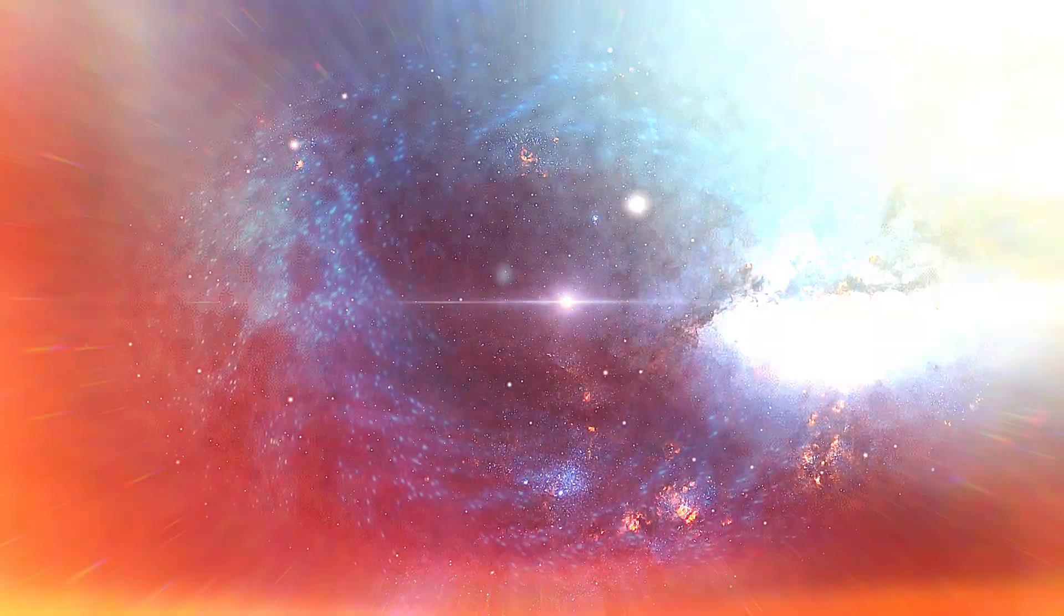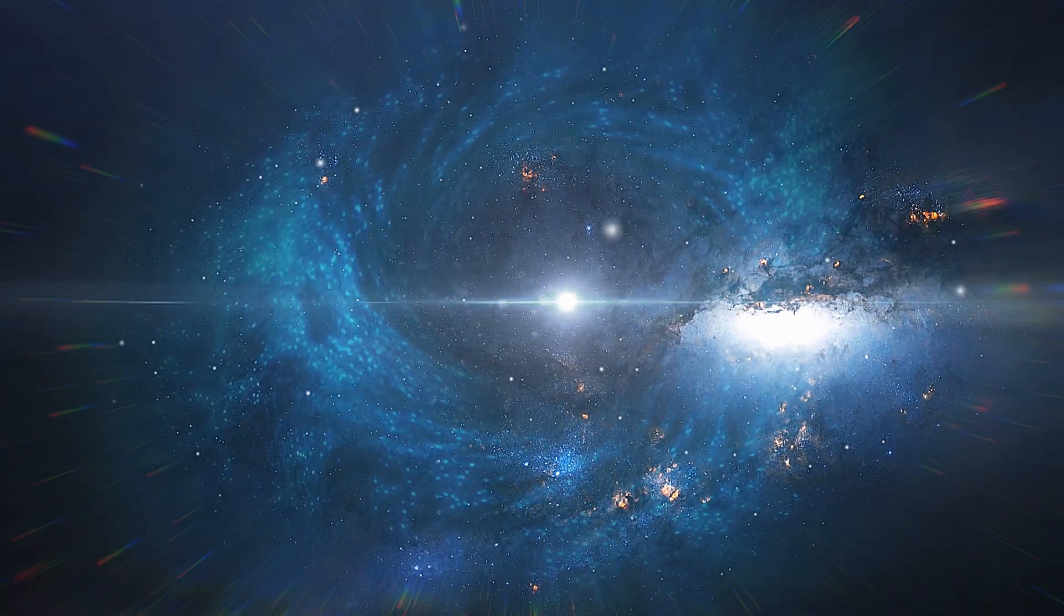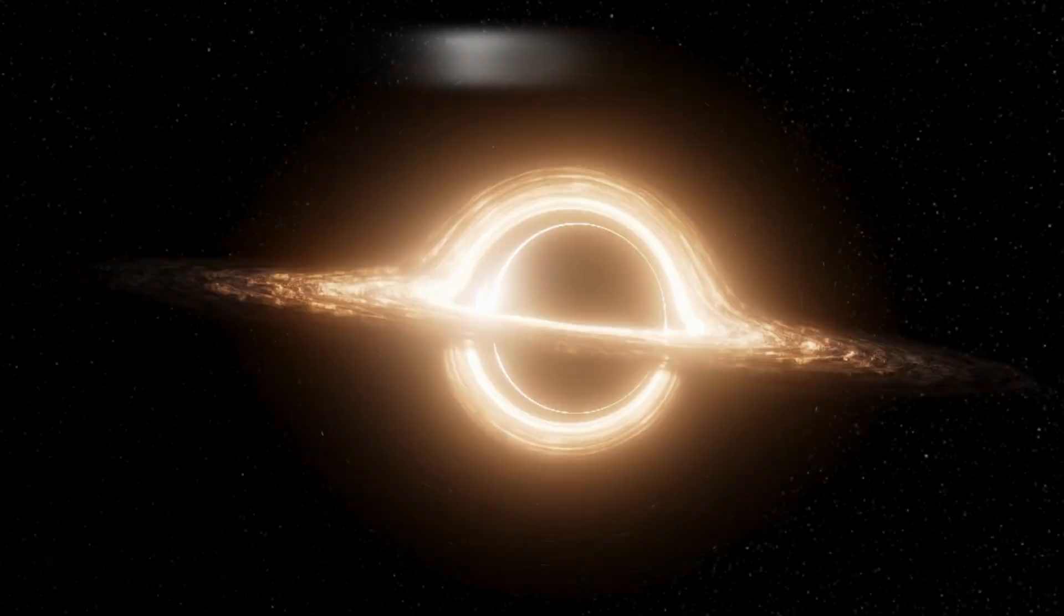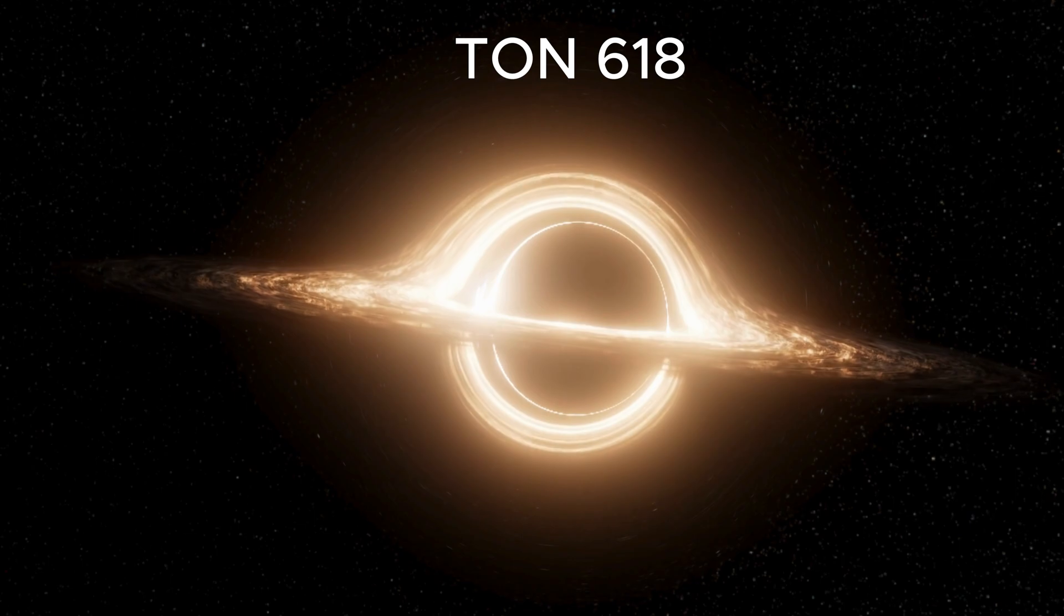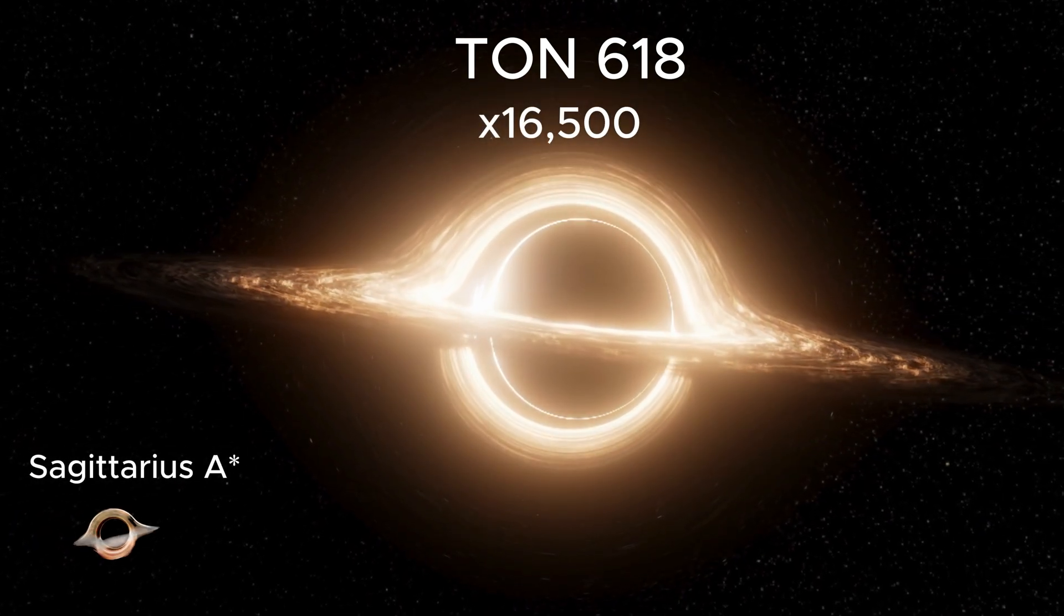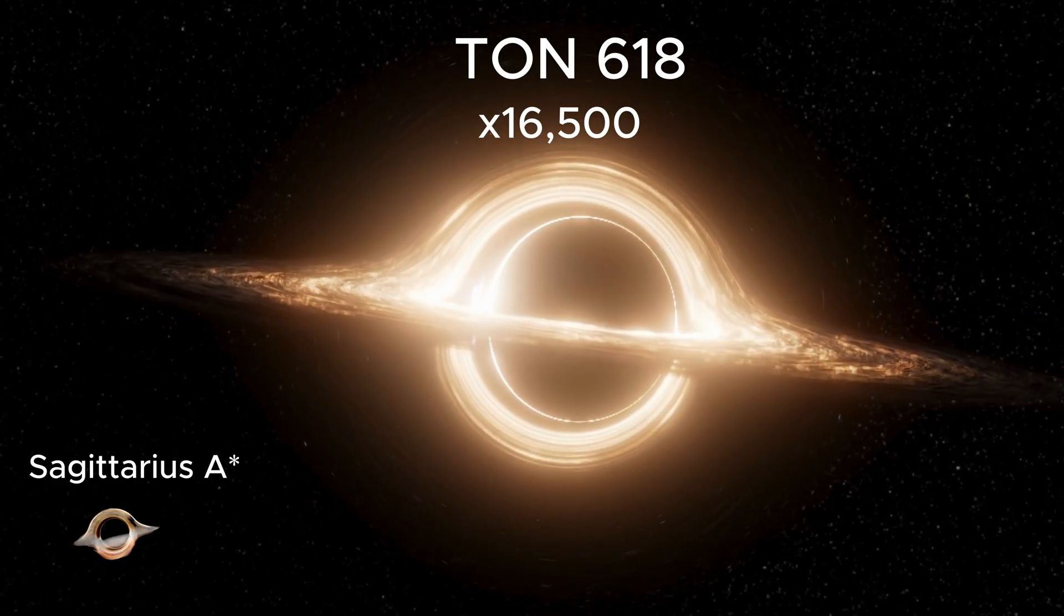To give you an idea of how big TON 618 is, here's some information. TON 618 has 16,500 times the mass of Sagittarius A, the supermassive black hole at the center of the Milky Way.